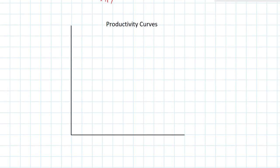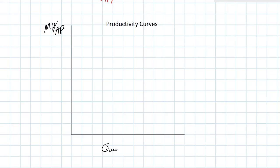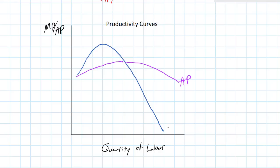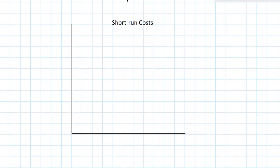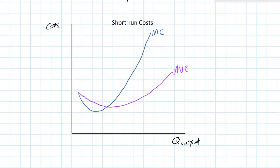Let's move on to business economics, or theory of the firm, starting with productivity curves. This shows how much output is attributable to each additional worker hired. Marginal product is upward sloping because of increasing marginal returns, then diminishing marginal returns. Average product increases until it crosses marginal product, then it decreases. The downward sloping range of marginal product represents diminishing marginal returns. Productivity also dictates the shape of a firm's short-run cost curves: when marginal product decreases, marginal cost increases; when average product decreases, average cost increases. The AVC and ATC curves must cross the marginal cost curve at their lowest points.